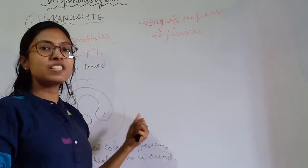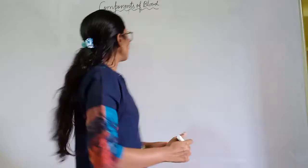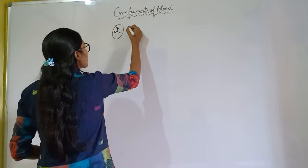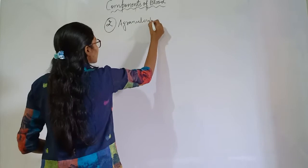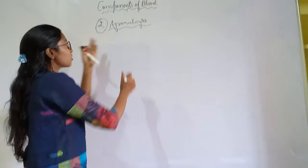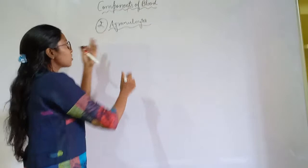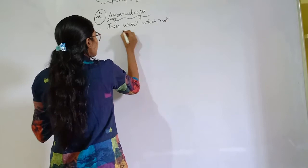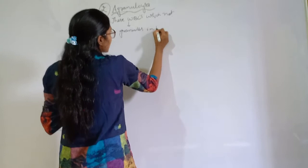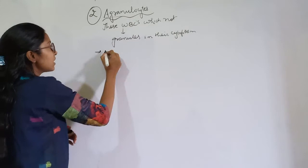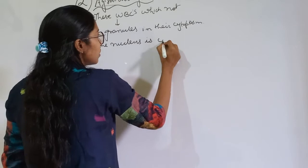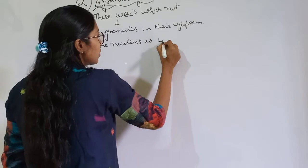That concludes granulocytes — neutrophils, basophils, and eosinophils. The second category is agranulocytes. Agranulocytes are WBCs that do not have granules in their cytoplasm, and their nucleus is circular or round, not lobed like granulocytes.